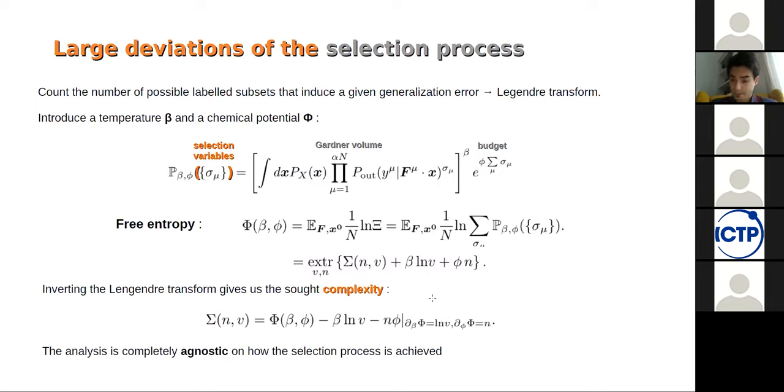What we did is introduce a set of selection variables, which take values zero or one, whether you choose or not the pattern to be put in the training set. Its probability measure is based on the introduction of an energy controlled by the inverse temperature beta. The energy is the Gardner volume. Then you also have a chemical potential phi, which sets the budget for your student. What you can do is that in the high dimensional limit, everything should be self averaging, and you should be able to just study the free entropy that you get in the typical case.